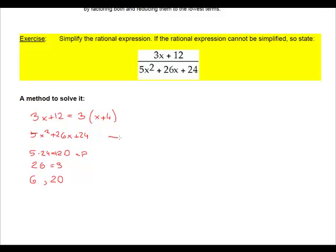So we rewrite the denominator expression 5x squared plus 6x plus 20x plus 24. We can see that the numbers that we just found, 6 and 20, we'll rewrite the middle term 26 as 6x plus 20x. So that by grouping the first two and the last two, we can factor this expression.